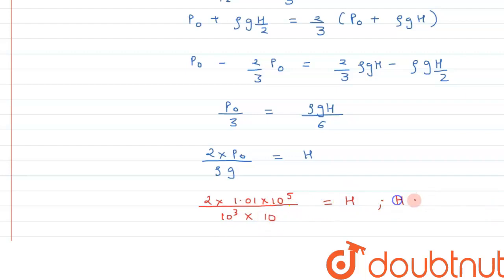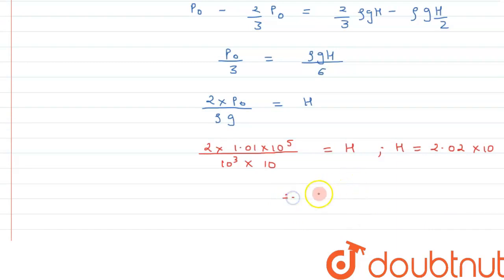This can be written as 2.02 × 10¹, which gives us the value. Therefore, we can say H equals approximately 20 meters. So this is the right answer to this question.